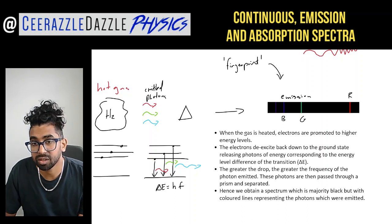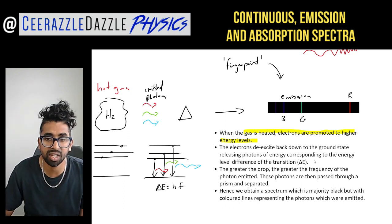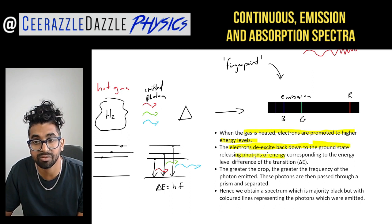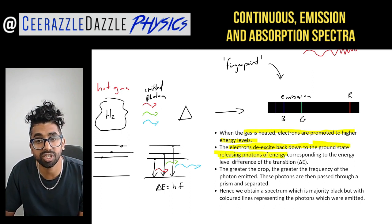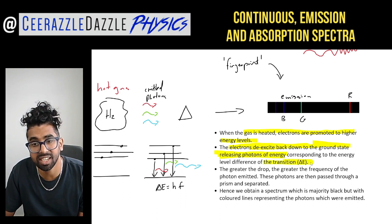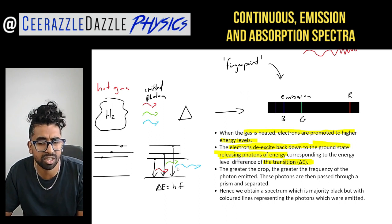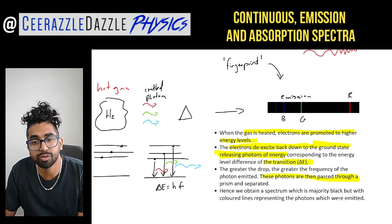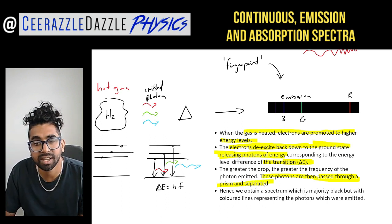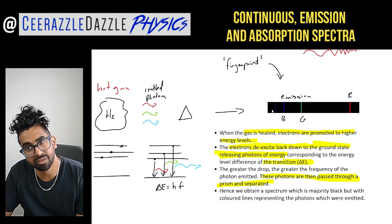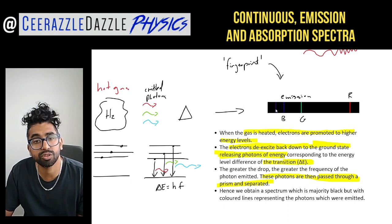So the emission spectrum is majority black but with colored lines representing the photons which were emitted from the gas. This acts like a fingerprint — every single gas will have its energy levels at different positions, so different gases produce different emission spectra. For example, heating helium gives a different emission spectrum than hydrogen.